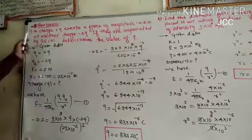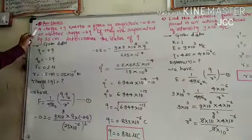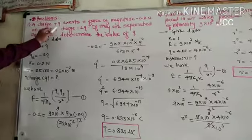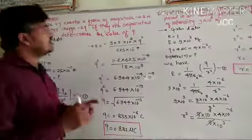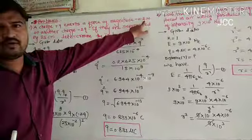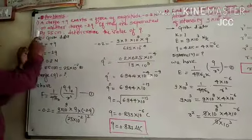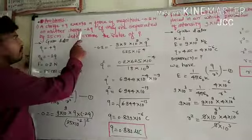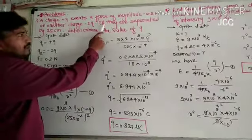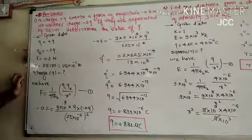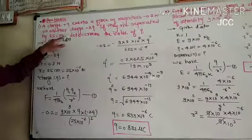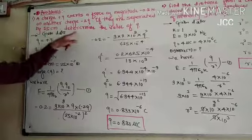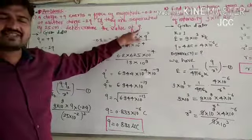Hello friends, this is another numerical. Charge Q plus Q exerts a force of magnitude minus 0.2 Newton on another charge minus 2Q if they are separated by 25 cm. Determine the value of Q means charge.